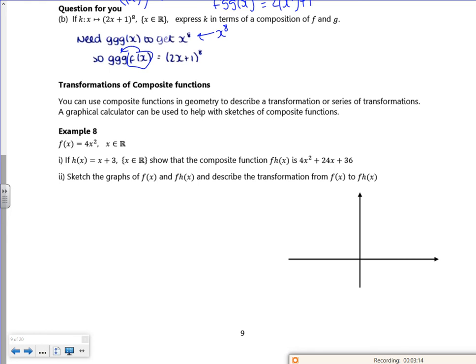So let me pause it a second. Right, are you ready? So we've got transformations of composites. We can use composites in geometry to describe a transformation or series of transformations. The calculator's really good. So f of x is 4x squared, h of x is x plus 3. Show that f of h is that.